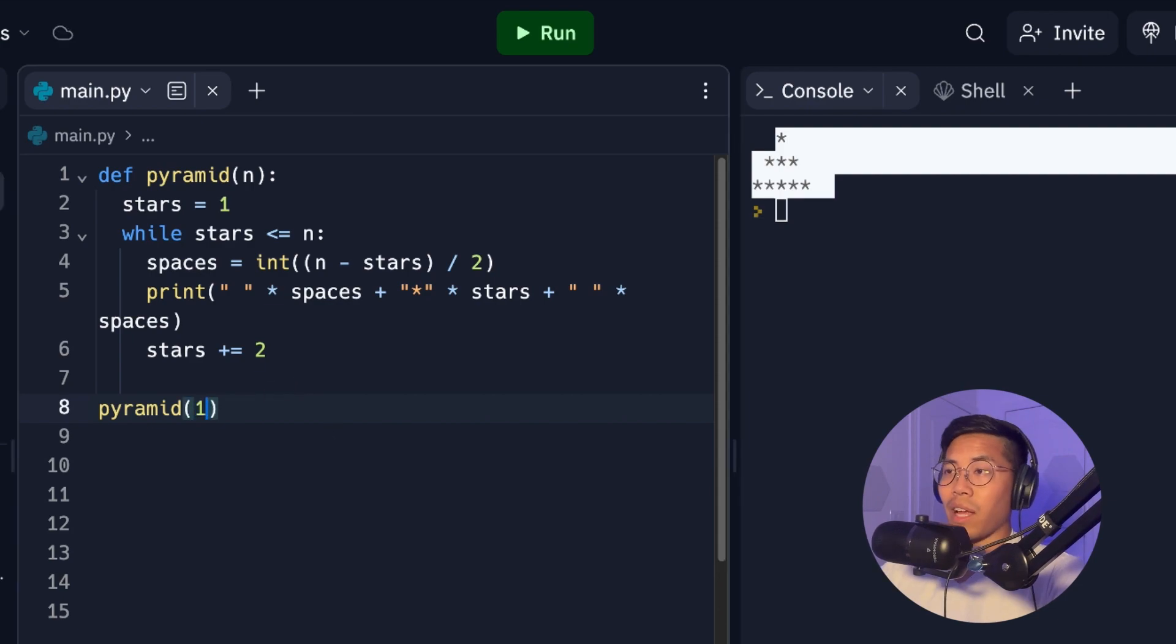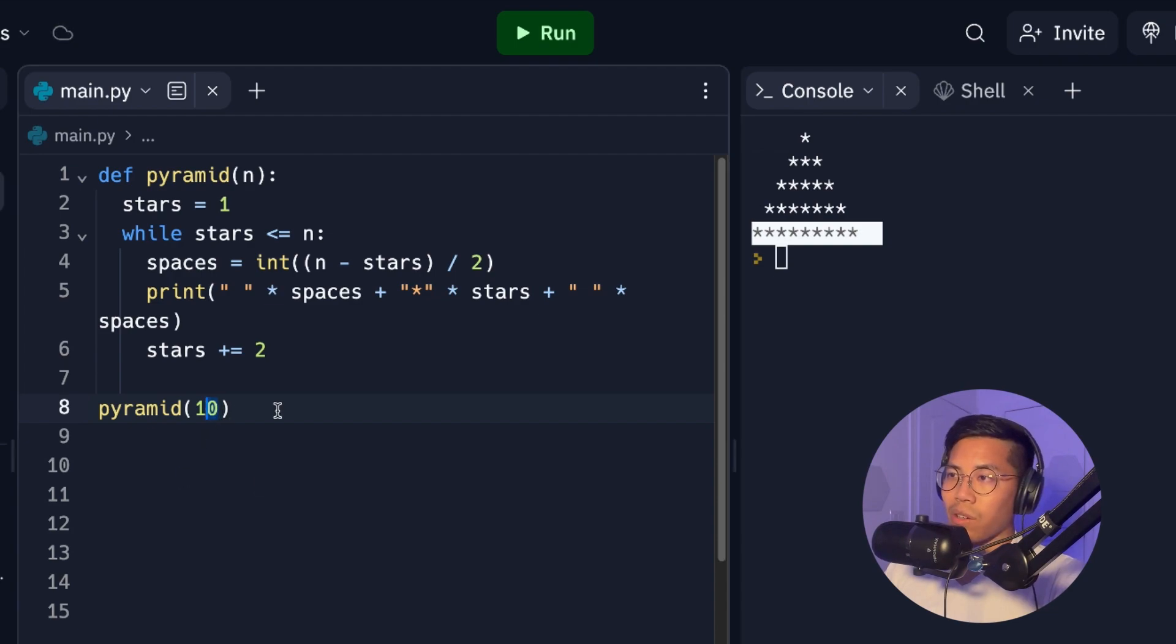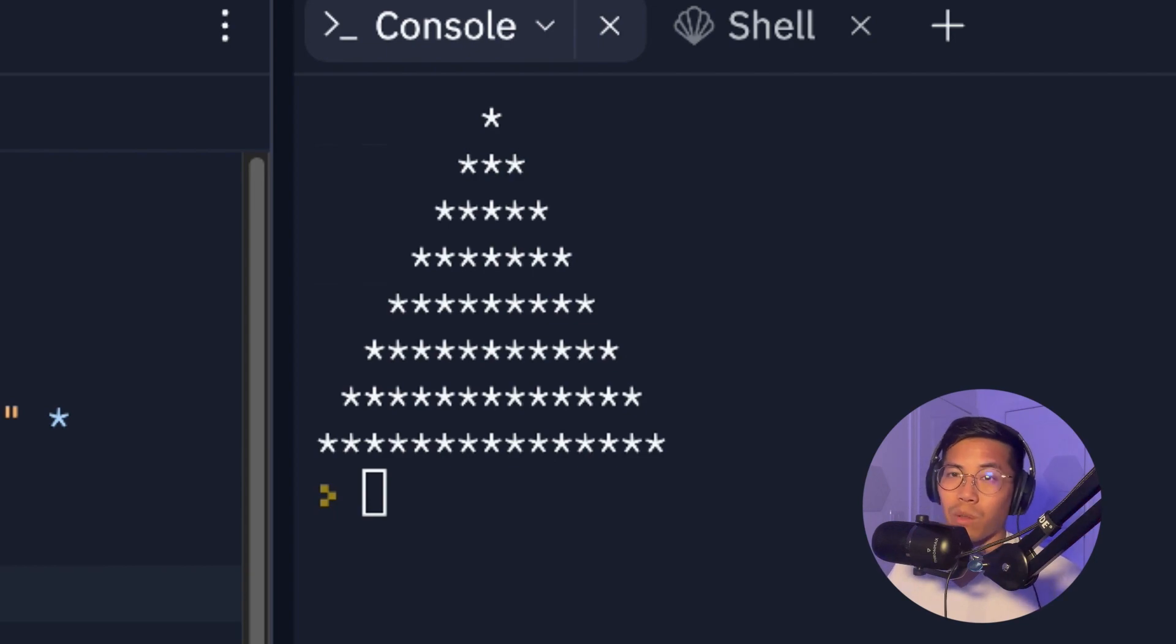And here we got our beautiful pyramid. Now we can put 10 here and click run code. And now we get a pyramid with base 10. And we can increase this number to 15 and run. And we can make this pyramid as big as we want because our code is nice and reusable.